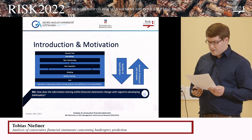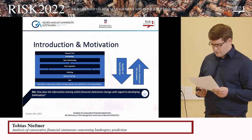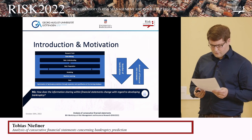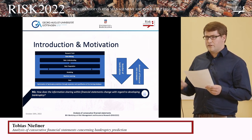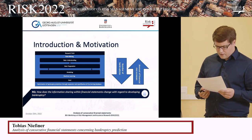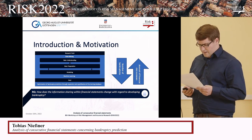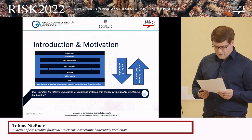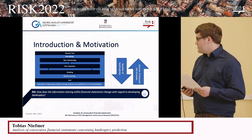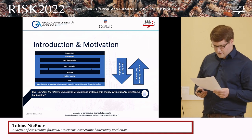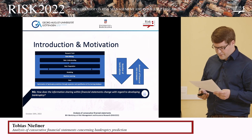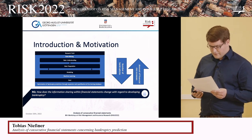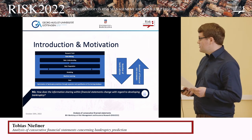While classical approaches are often trained based on individual balance sheet evaluations, the question arises — especially when looking at textual data — whether positive or negative developments are reflected by changes in the text over time. The expectations in this respect are high, but we are not aware of any work that addresses this problem and looks at time series and the development of individual parameters in a contrasting way. Thus we define the research question: how does information sharing within financial statements change with regard to a developing bankruptcy?